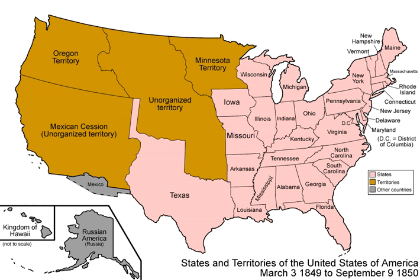Texas was allowed to keep the following portions of the disputed land: south of the 32nd parallel and south of the 36 degrees 30 parallel north and east of the 103rd meridian west. The rest of the disputed land was transferred to the federal government.